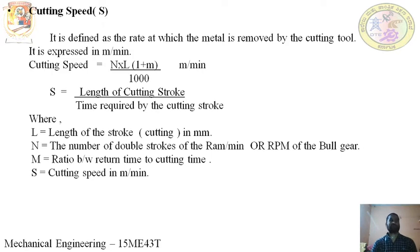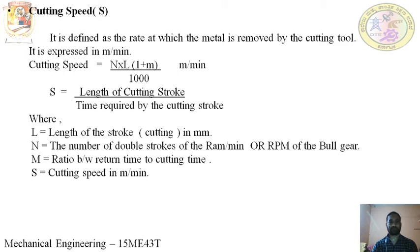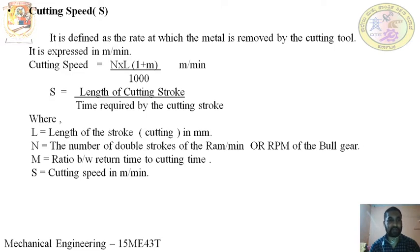The cutting speed in the shaper is defined as the rate at which the metal is removed from the workpiece by the cutting tool. It is expressed in meters per minute — that is, how much material in meters is removed in one minute by the shaper.